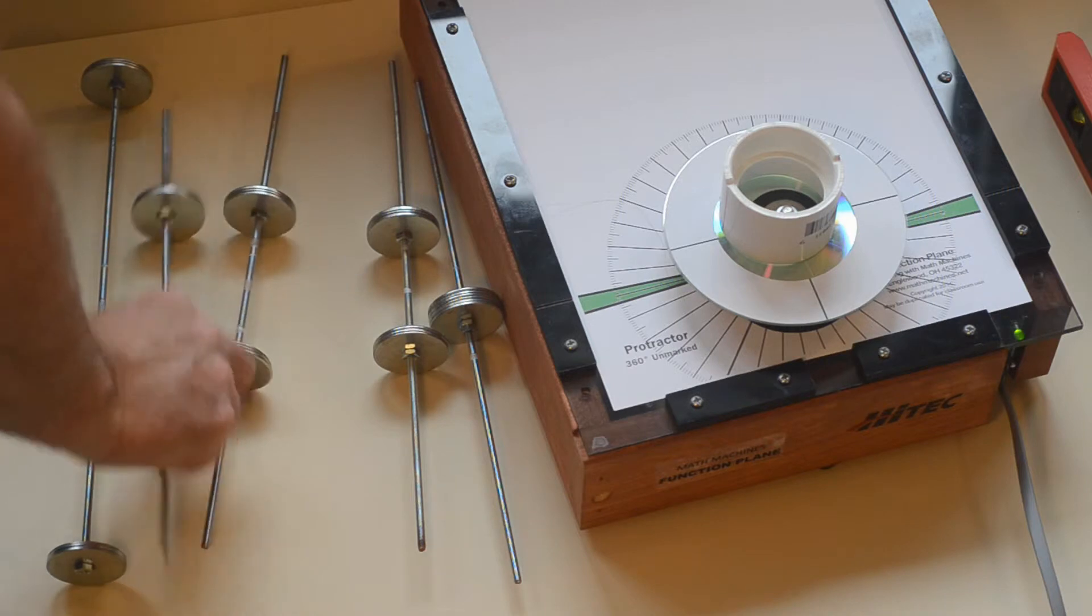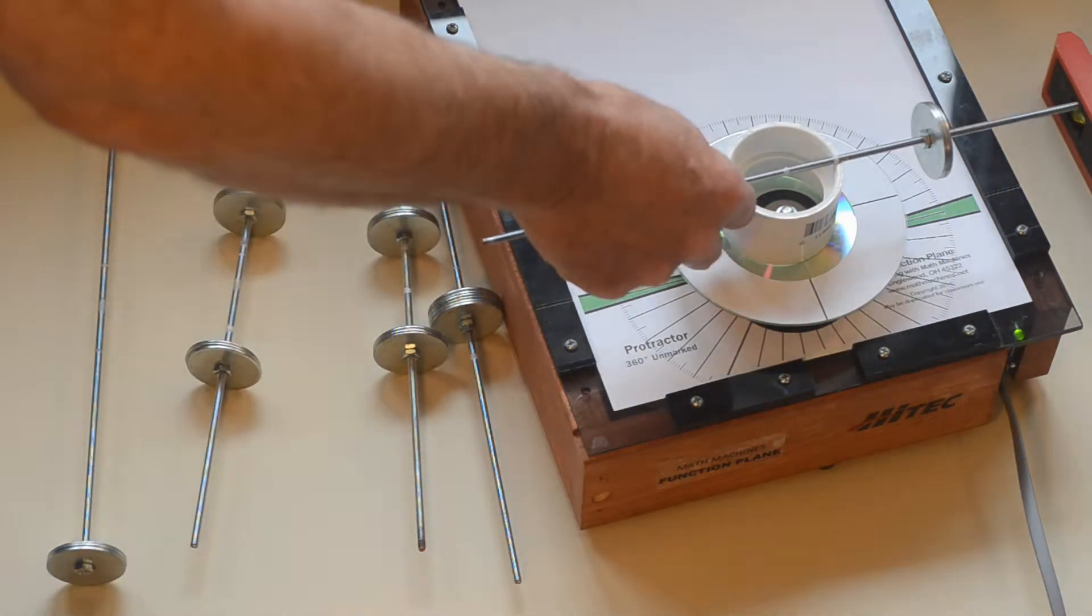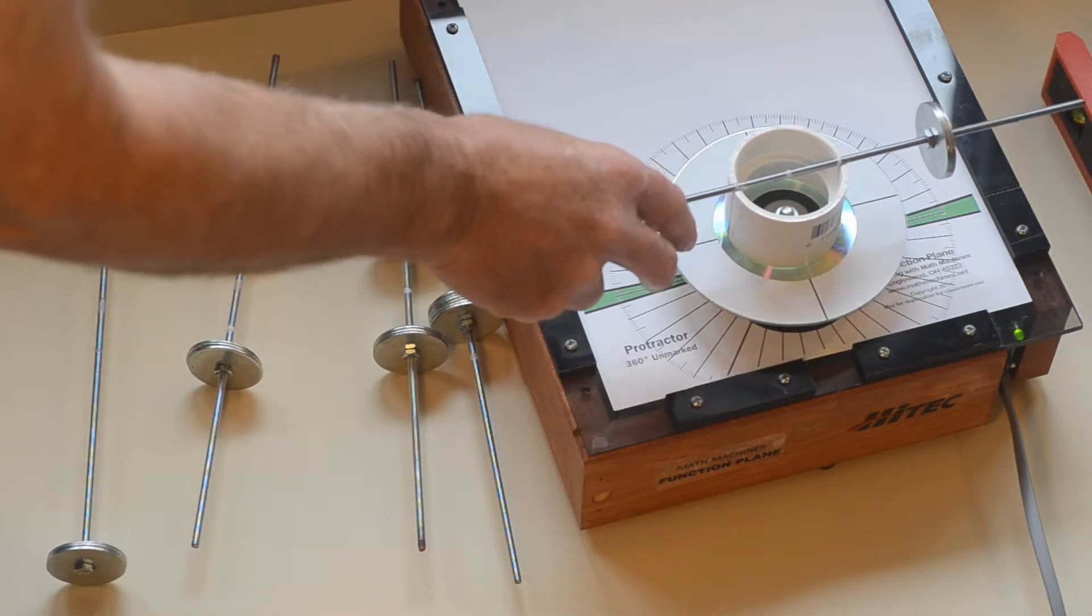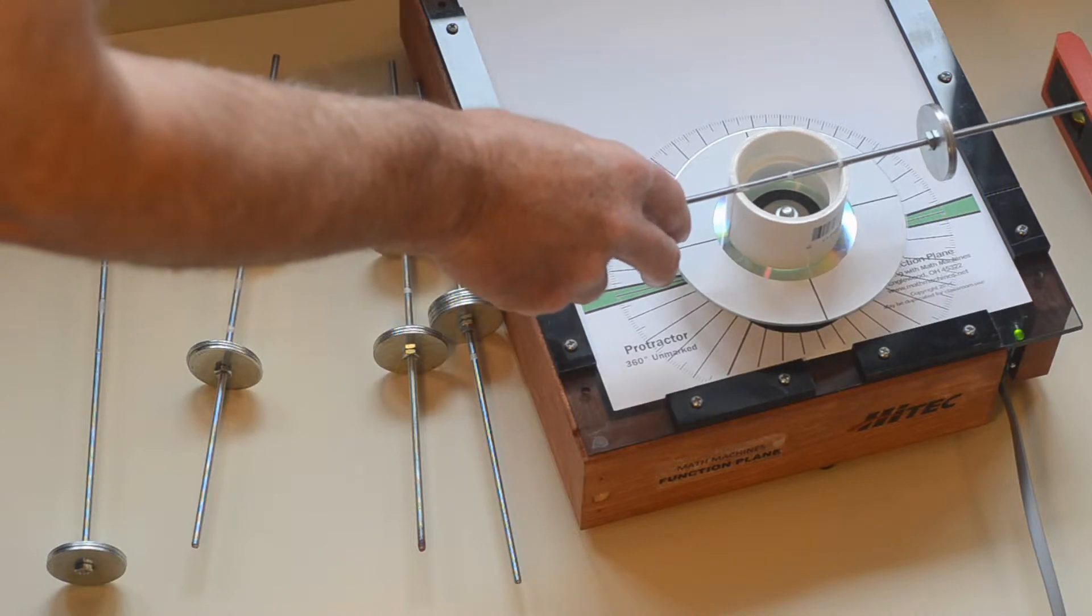With the washers at their maximum distance from the center, the system slipped significantly when the angular acceleration was 7 radians per second squared, and catastrophically at a higher acceleration.